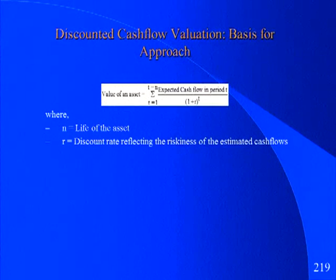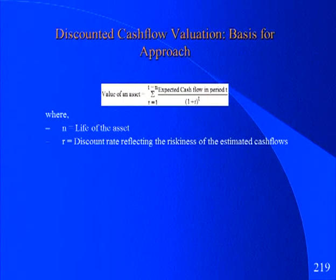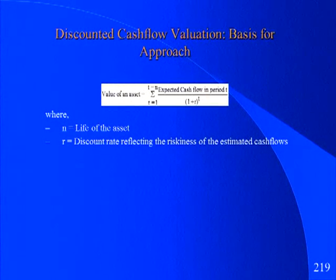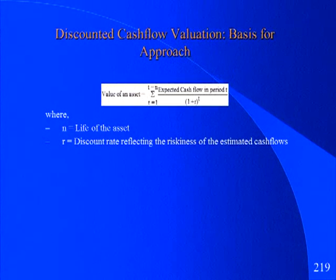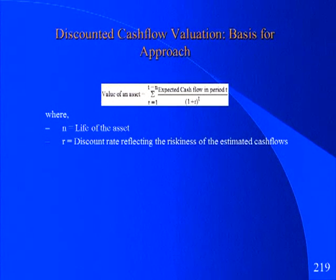The value of an asset is the present value of the expected cash flows from that asset. That's how we did capital budgeting; that's how you price a bond. This equation animates almost everything we do in finance. The risk in this equation is captured entirely in the discount rate — cash flows are not risk-adjusted, they're just expected cash flows. You look across 100 scenarios and take the expected cash flow. So: the value of an asset is the present value of its expected cash flows.